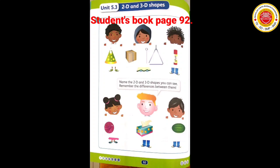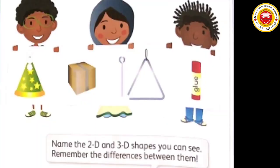Oke students. Now we study page 92. Name the 2D and the 3D shapes you can see. Remember the difference.